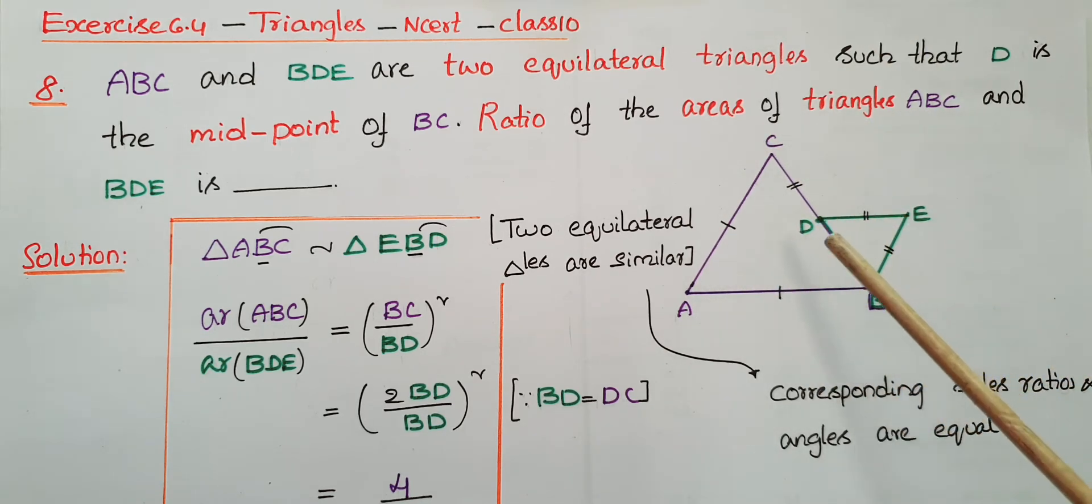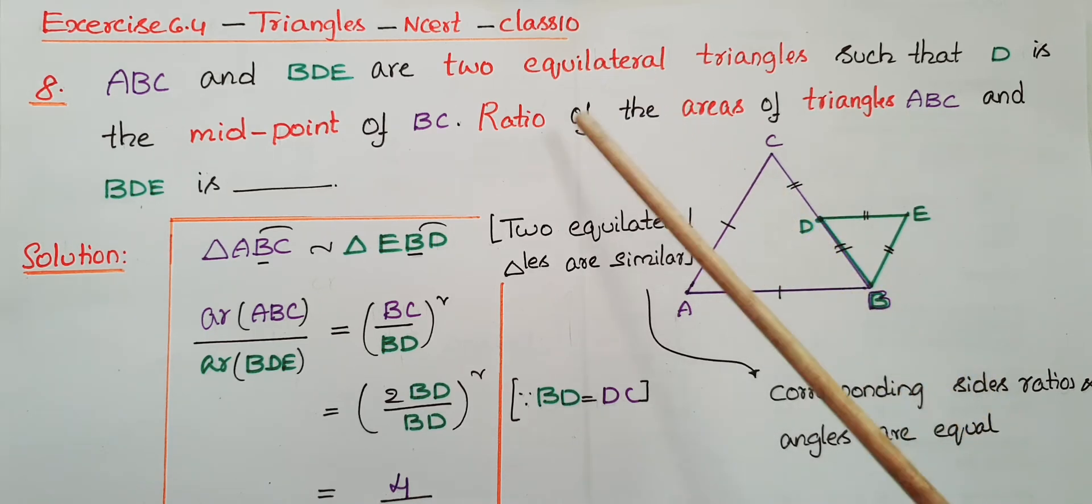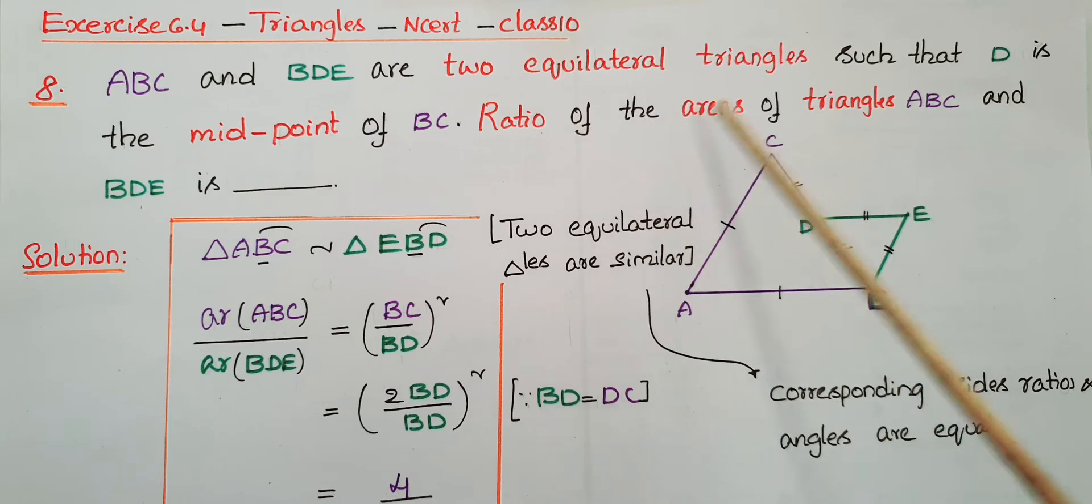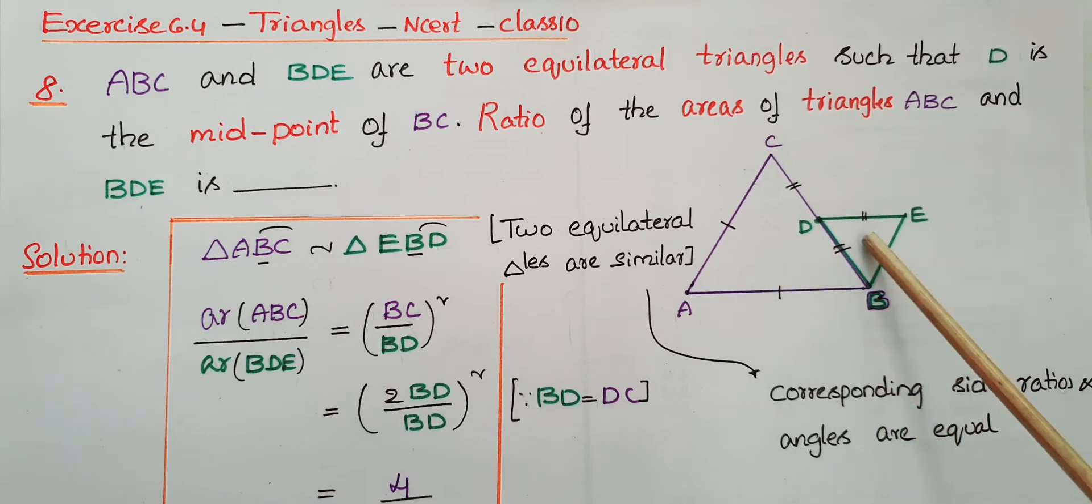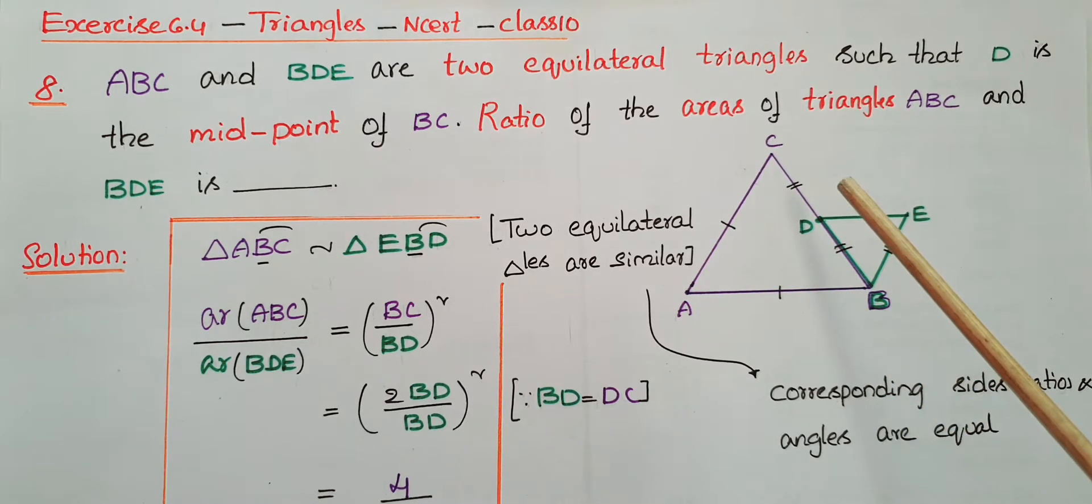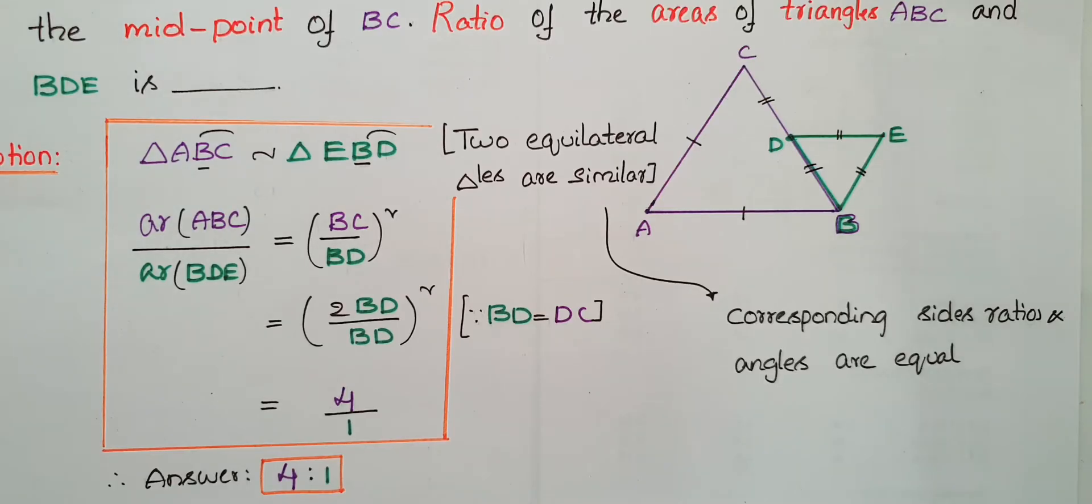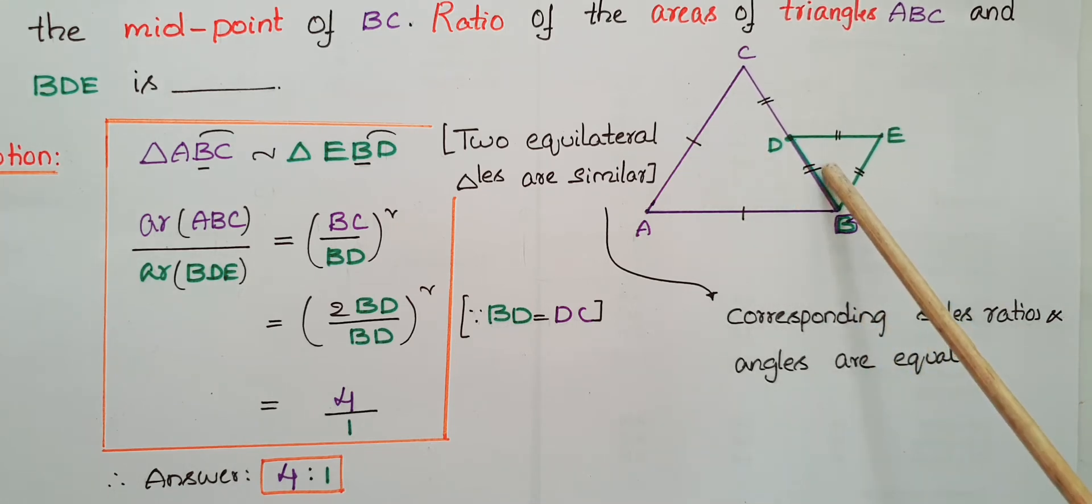We know that in an equilateral triangle each angle is 60 degrees and all sides are equal. Here we have to find ratio of the areas of triangles ABC and BDE. We also know that ratio of areas of two similar triangles is equal to square of ratio of their corresponding sides. So we have to check whether these two triangles are similar or not.